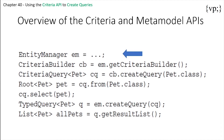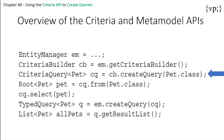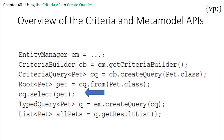First, you use an Entity Manager instance to create a Criteria Builder object. Then you create a query object by creating an instance of the Criteria query interface. This query object's attributes will be modified with the details of the query. Next, you set the query root by calling the from method on the Criteria query object. Next, you specify what type the query result will be by calling the select method of the Criteria query object.